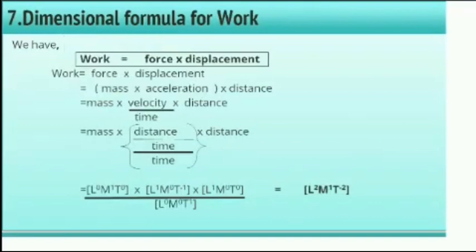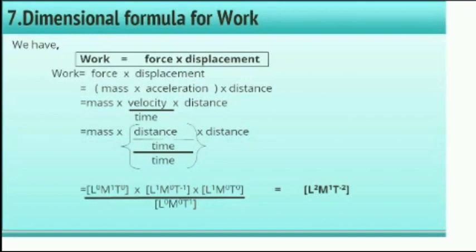Next, the example of work. Work done equals force into displacement, so work equals mass into acceleration into distance. Using the formula for force as mass into acceleration, and acceleration as velocity divided by time, we get work equals mass into distance divided by time, into distance divided by time. The dimensional formula for work is [L², M¹, T⁻²].